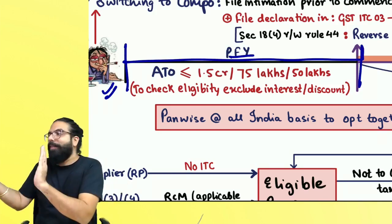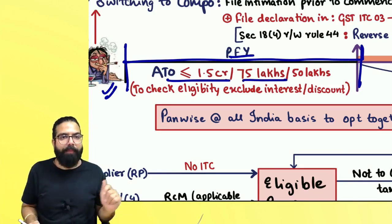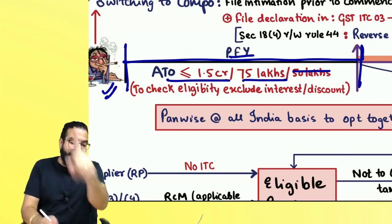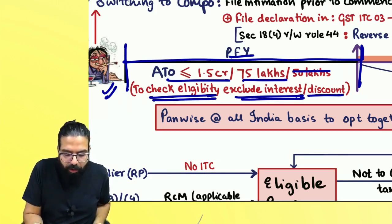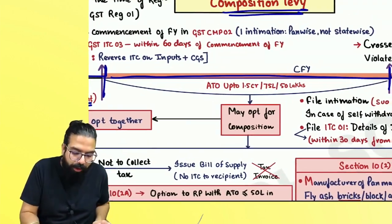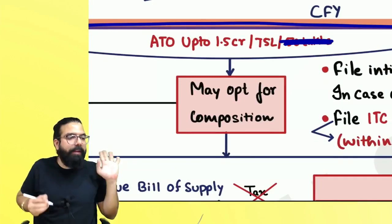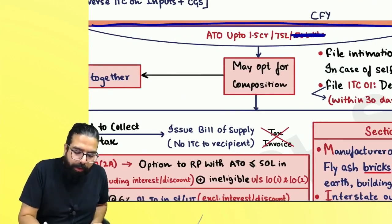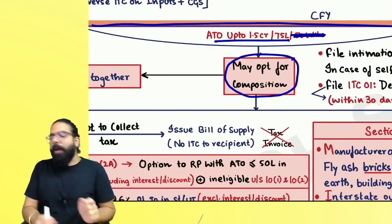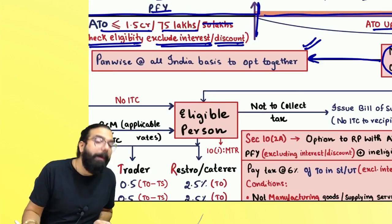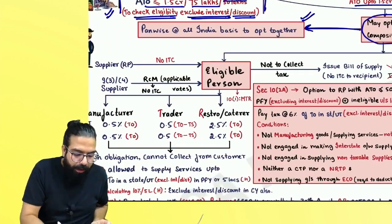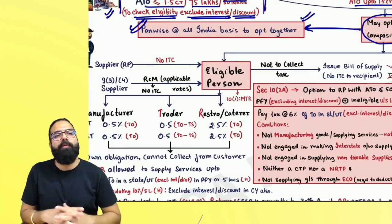If your turnover in the preceding financial year was up to 1.5 crore or 75 lakh — excluding interest or discount — then in the current financial year you are eligible for the composition scheme. The option to go for the composition scheme must be exercised pan-wise, on an all-India basis. Whatever registrations you have under your PAN, all have to come under composition scheme together.